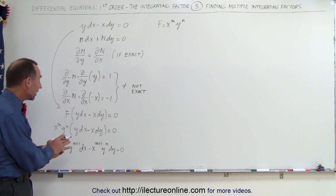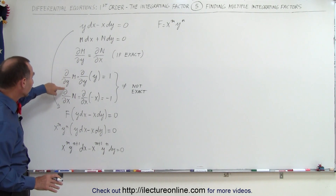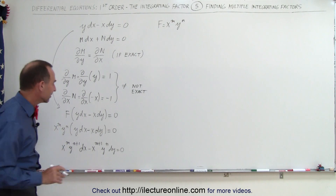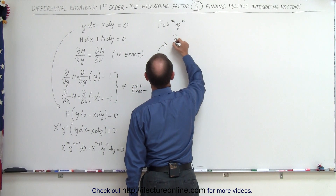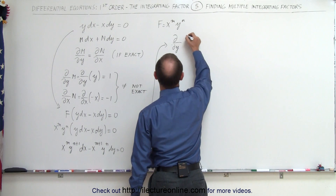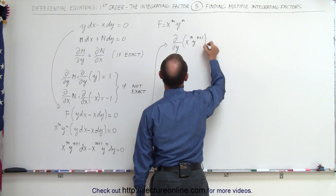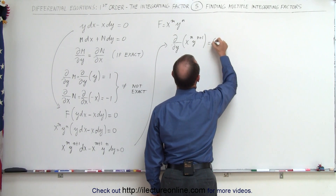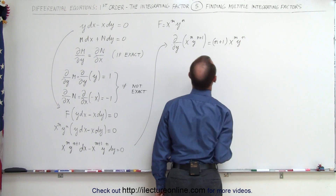For this to be exact, we take the partial of M with respect to y and the partial of N with respect to x. The partial with respect to y of x^m · y^(n+1): since x is constant, we get (n+1) times x^m · y^n. Then we take the partial with respect to x of negative x^(m+1) · y^n: since y is constant, this becomes minus (m+1) times x^m · y^n.